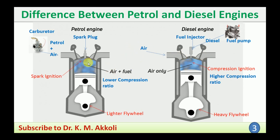After the suction, compression takes place. In the petrol engine, there is a lower compression ratio, so whatever pressure is attained during compression will be lower. In the diesel engine, a higher compression ratio is present. For the petrol engine, the compression ratio is about 7:1 to 12:1, while for the diesel engine it is around 14:1 to 22:1.